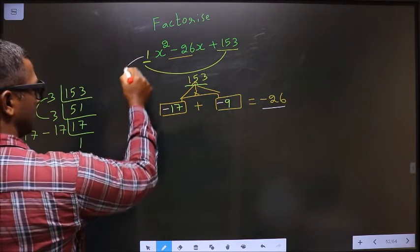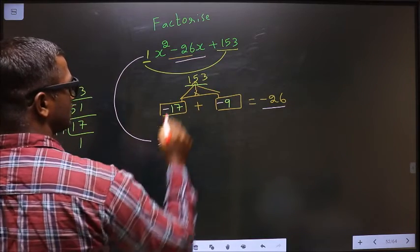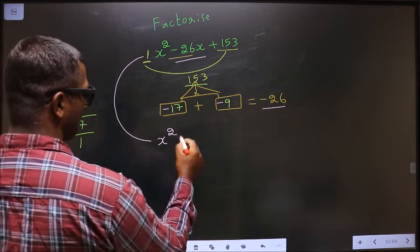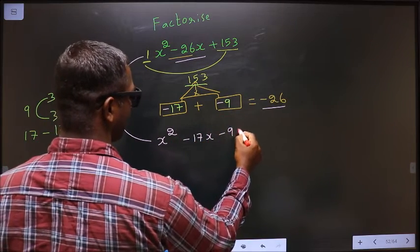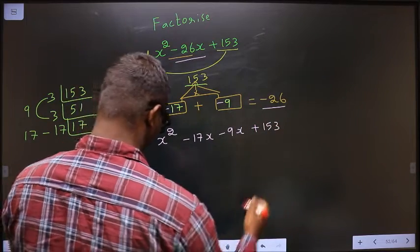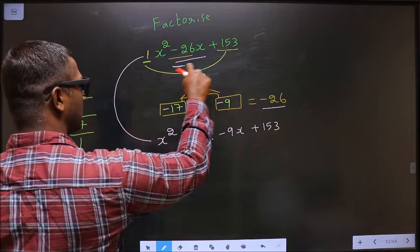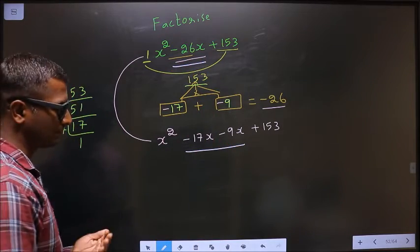Now this will change to, in place of this minus 26x, now I write x squared minus 17x minus 9x plus 153. Clear? In place of minus 26x, I have written this. Next.